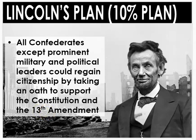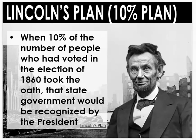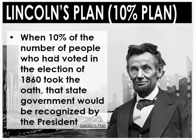The reason it gets the name the 10% plan is that he says once 10% of people who voted — those who voted in the election of 1860, the election that made Lincoln president and after which the Southern states seceded — once 10% of the people in that state take that oath, then their government, that state, will be recognized by the president and allowed to rejoin.